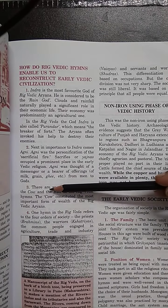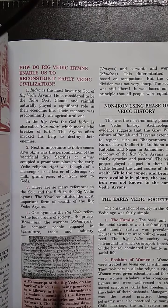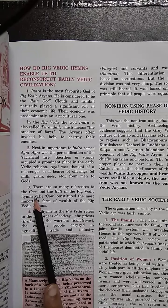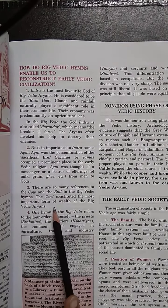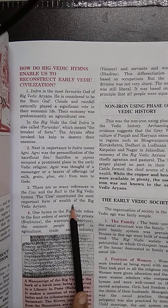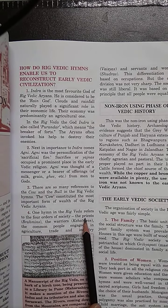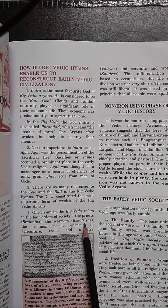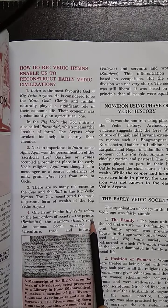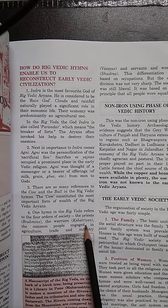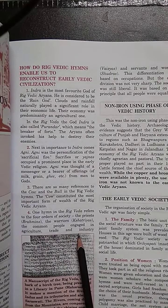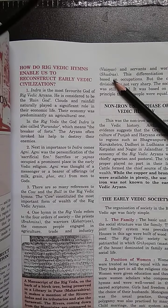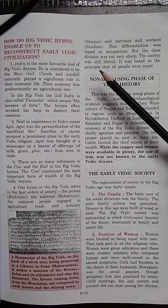There are many references to the cow and the bull in the Rig Veda, indicating that the cow held the most important place in their society. The cow was the most important form of wealth during the Rig Vedic period. The hymns also refer to four orders of society: the priests known as Brahmins, the warriors known as Kshatriyas, common people engaged in agriculture and trade known as Vaishyas, and servants known as Shudras.